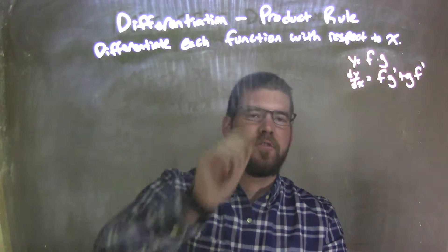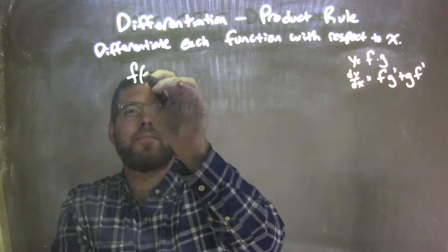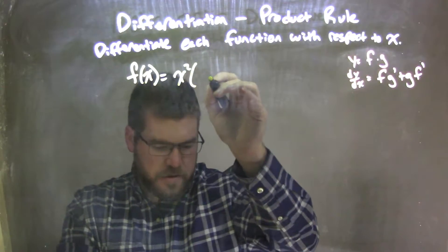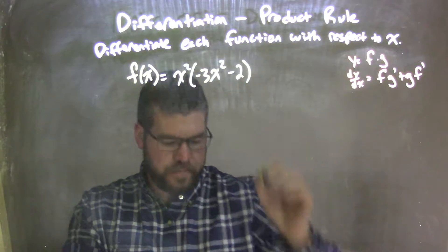We're going to differentiate each function with respect to x. So if I was given this function, f of x is equal to x squared times negative 3x squared minus 2.